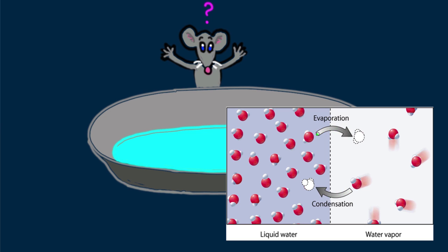Both evaporation and condensation occur continuously. The constant water level simply indicates equal rates of both, not that nothing's happening.